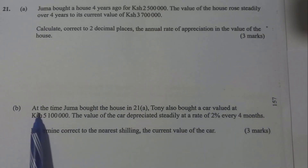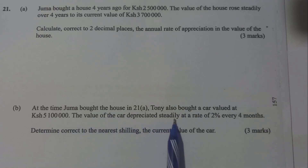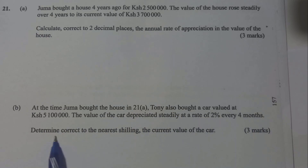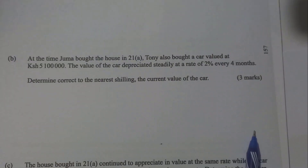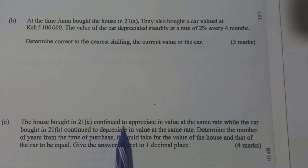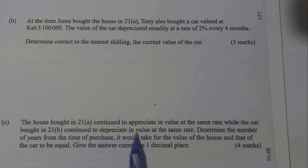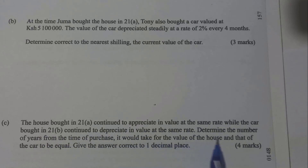Part B: At the time Juma bought the house in 21a, Tony also bought a car valued at 5.1 million KS. The value of the car depreciated steadily at the rate of 2% every 4 months. Determine correctly to the nearest shilling the current value of the car. Part C: The house bought in 21a continued to appreciate in value at the same rate while the car bought in 21b continued to depreciate in value at the same rate. Determine the number of years from the time of purchase it would take for the value of the house and that of the car to be equal. Give the answer correct to 1 decimal place.